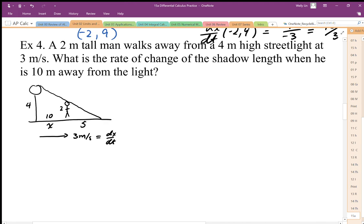So how is this shadow changing based on this information? So we need to first of all come up with a relationship that's going to relate the variables in question here. So we have X, we have S, we need to connect those two variables.